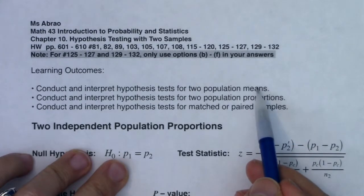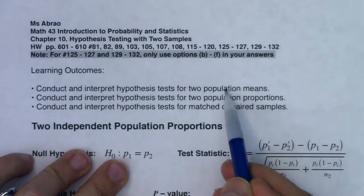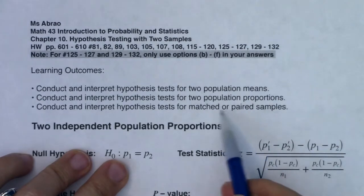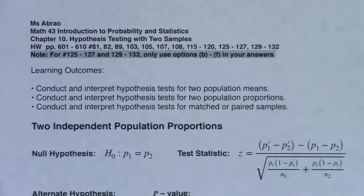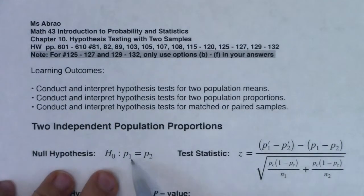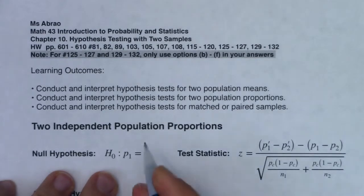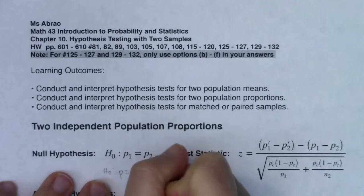When we get to mean land, two population means will be the independent samples, and matched pairs will be the paired samples. When we're in proportion land, we're only going to have independent samples, so we won't have to worry about making that distinction. When you have two independent population proportions, here's going to be your null — it's going to be slightly different from chapter nine.